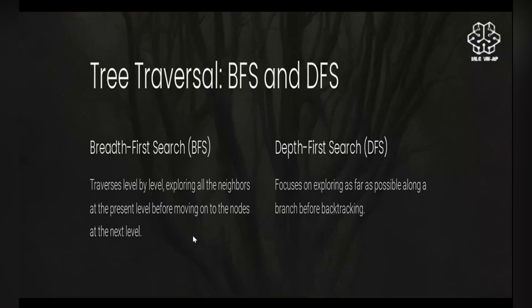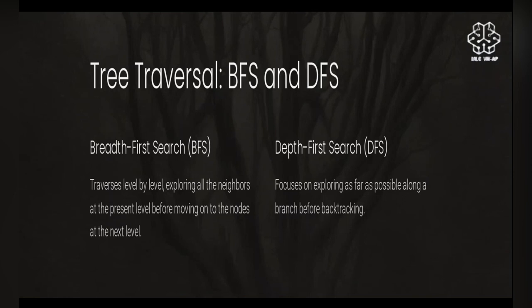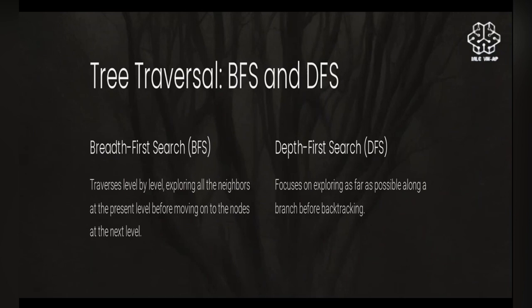Tree traversal has two different algorithms: breadth first search and depth first search. These are algorithms you'll also study in AI. As a tree follows a hierarchical structure, in breadth first search you simply iterate through nodes level by level. In depth first search, you dive deep into the tree and then backtrack, returning nodes one by one. Breadth first search is straightforward, but depth first search has three methods: pre-order, post-order, and in-order.